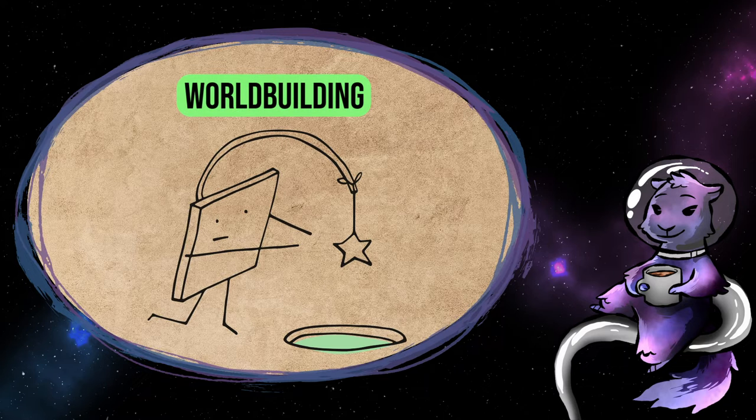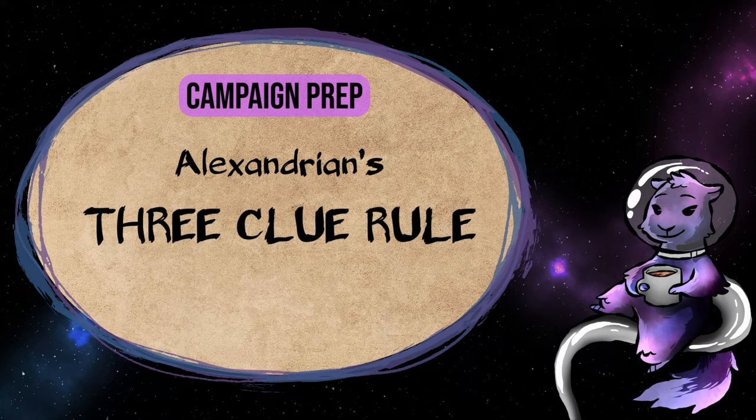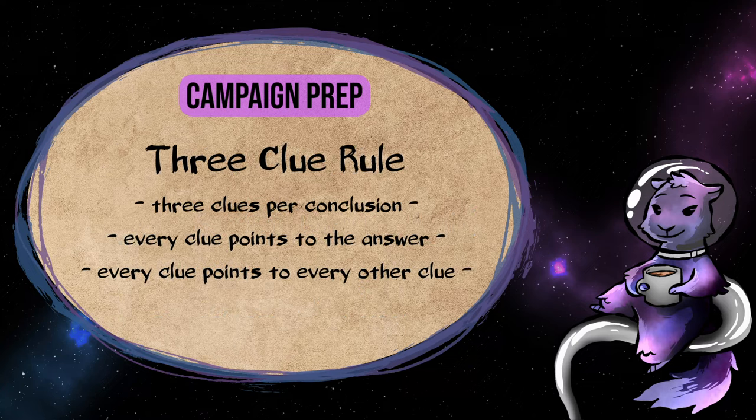A great example of a campaign prep system is Alexandrian's three-clue rule. I'm going to summarize it, but, like, don't cheat yourself here. I've linked the article in the description. This isn't my idea. It's just one I use constantly. In brief, the three-clue rule states that for a given conclusion you want your players to draw,